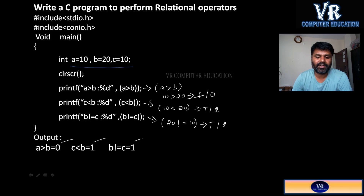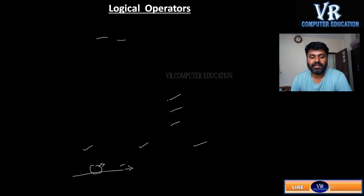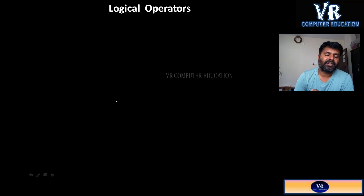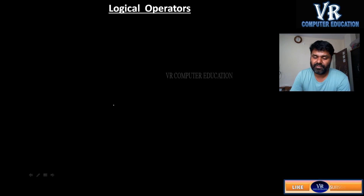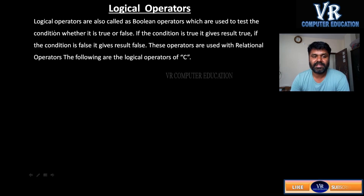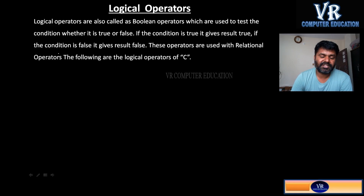I hope you understood relational operators. Next, the most important operators are logical operators. Logical operators are used to test conditions. If the condition is true, the result will be true; if the condition is false, the result will be false. Logical operators are also called boolean operators because they give the result either true or false, and they are used with relational operators.